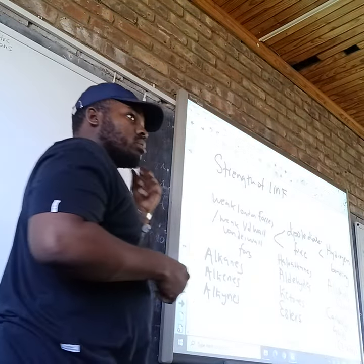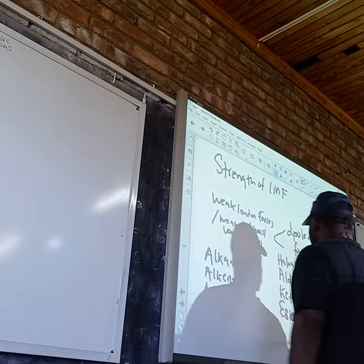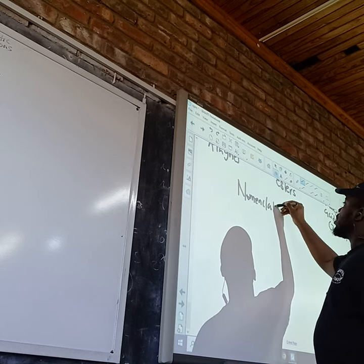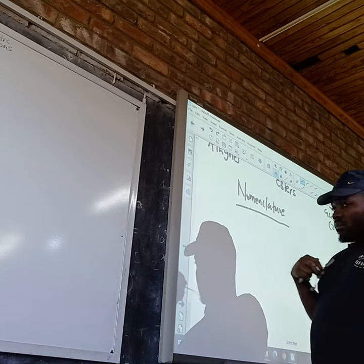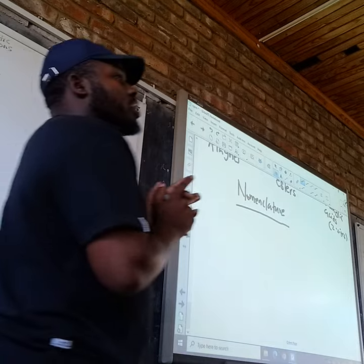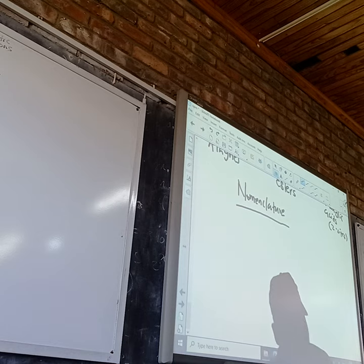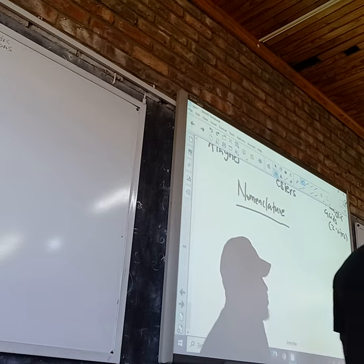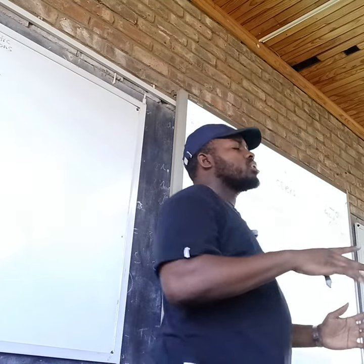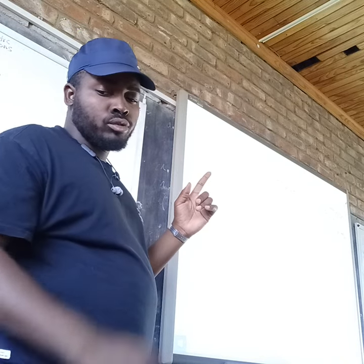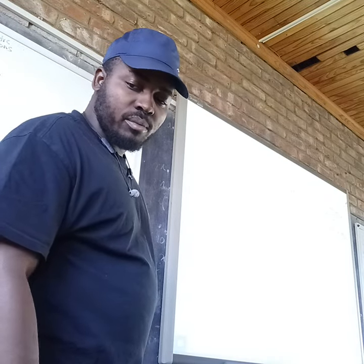The next part is to choose what? Nomenclature. Nomenclature talks about the naming of organic compounds. The only naming you need to know is for compounds from carbon number one up to ten. So for nomenclature we use the following prerequisites.